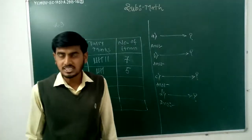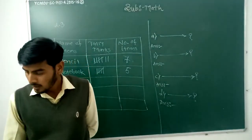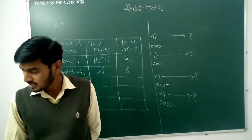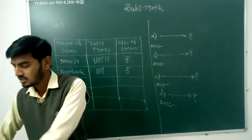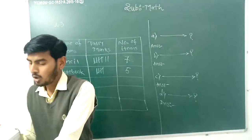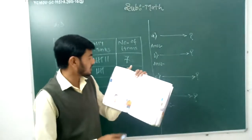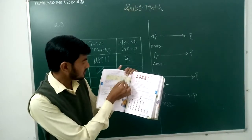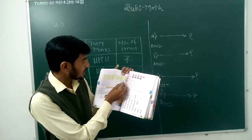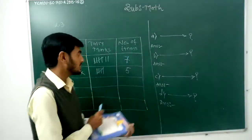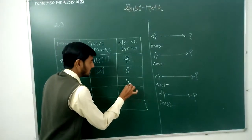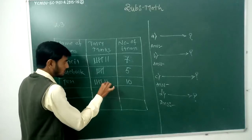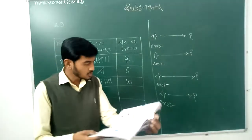Next one is pen — write down pen. How many pens were sold from this stationery? Count: 1, 2, 3, 4, 5, 6, 7, 8, 9, and 10. Total 10 pens sold from the stationery. Write down 10 and the tally mark for pen: 1, 2, 3, 4, 5 and 1, 2, 3, 4, 5.